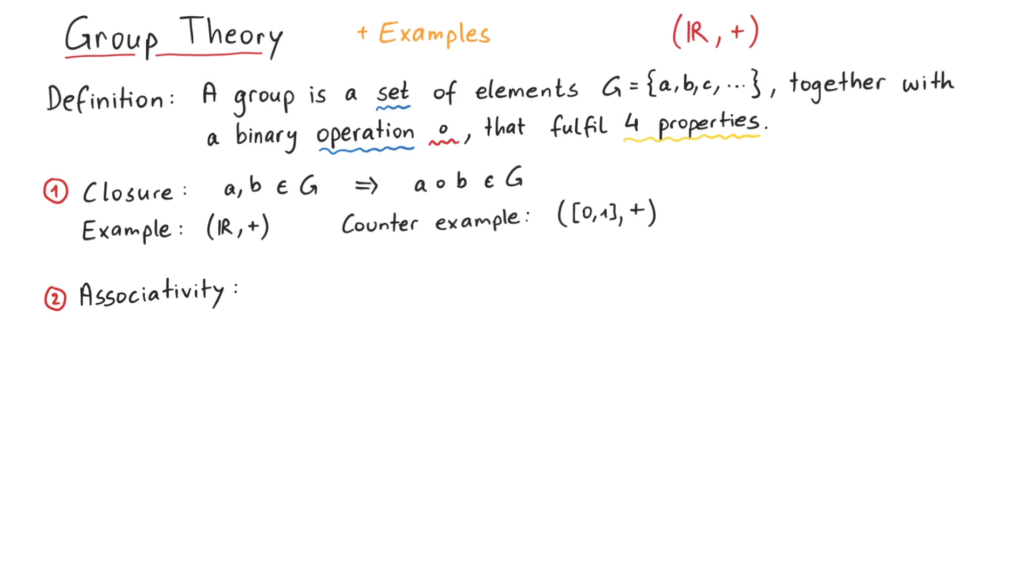Second, associativity. If we compute three elements, then it should make no difference where we put the brackets, whether we first evaluate the second and third, or the first and second elements first. This should hold for any elements a, b, c in G. An example could be again R plus, and the counter example could be the vector space R together with the vector cross product.